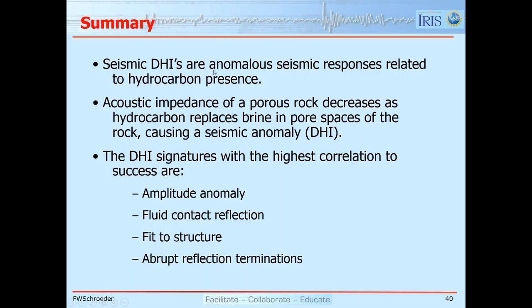In summary, seismic DHIs are anomalous seismic responses associated with the presence of hydrocarbons. The acoustic impedance of a porous rock decreases as brine is replaced by oil or gas, causing most DHI signatures. The four main signatures people look for with highest confidence are: amplitude anomaly (bright spots), fluid contact reflections (flat spots), fit of an anomaly to structure, and abrupt termination of high-amplitude reflections.